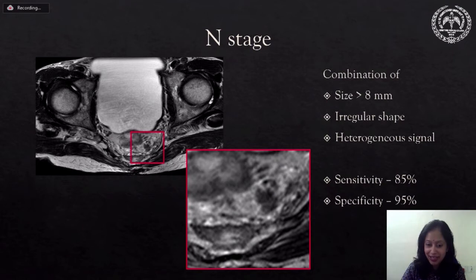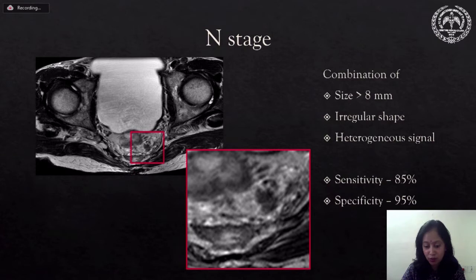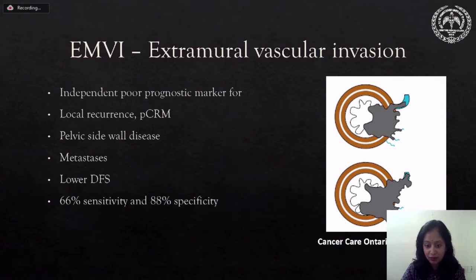MRI has at least 85% sensitivity in depicting lymph node stage when a combination of size and shape criteria are used. A very small lymph node with irregular shape and tumor signal intensity would be reported as a significant mesorectal lymph node. Extramural vascular invasion, or EMVI, is an important finding to recognize because it is a poor prognostic marker for local recurrence, margin positivity, pelvic sidewall metastasis, and disease-free survival.